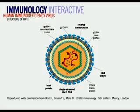The subscripts ENV and GAG indicate the viral gene which encodes that protein. Also contained within the virus core are a number of proteins required for the processing of viral RNA within the host cell. All of the viral genes are encoded within a single strand of RNA, just 10,000 bases long.